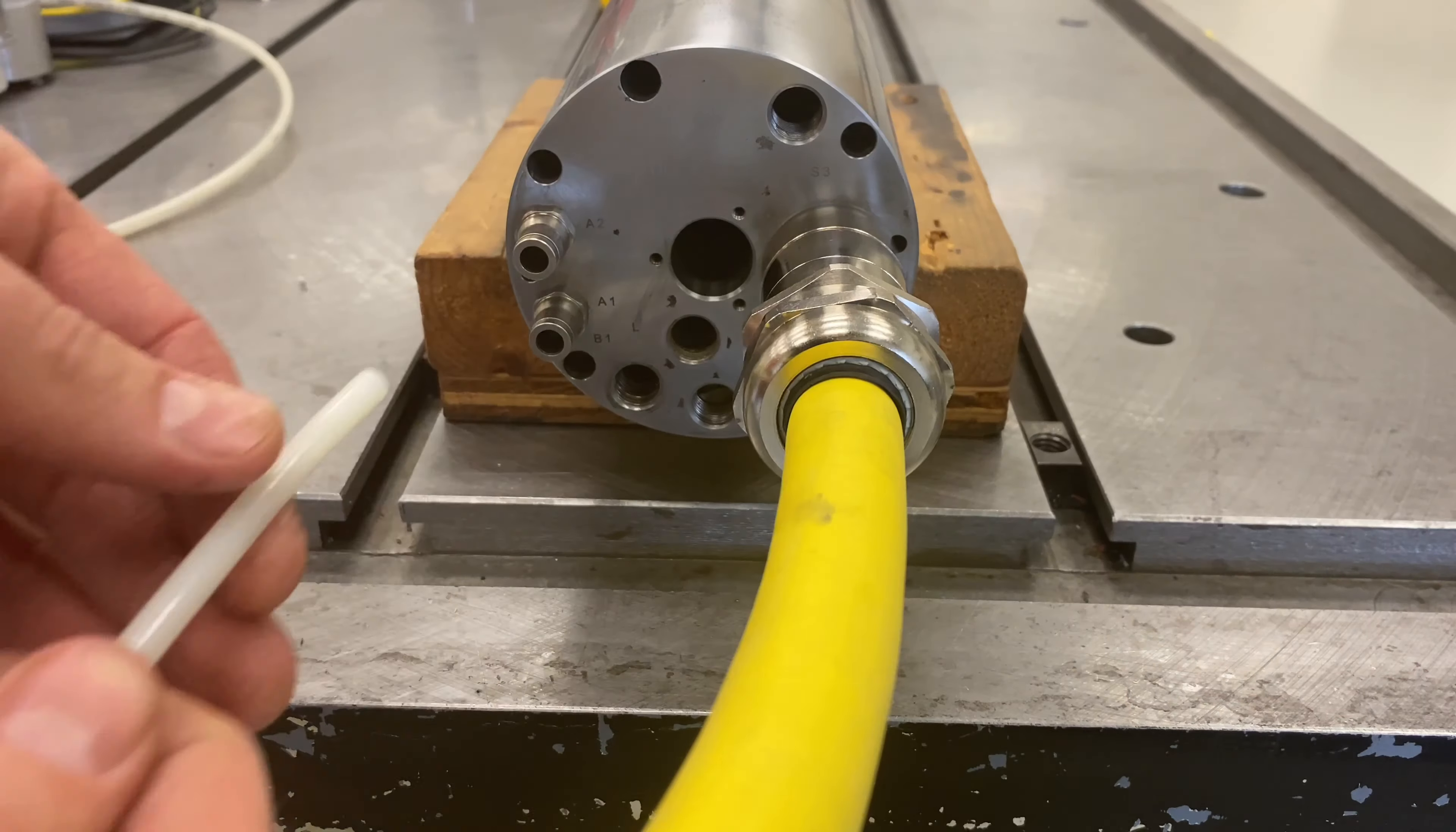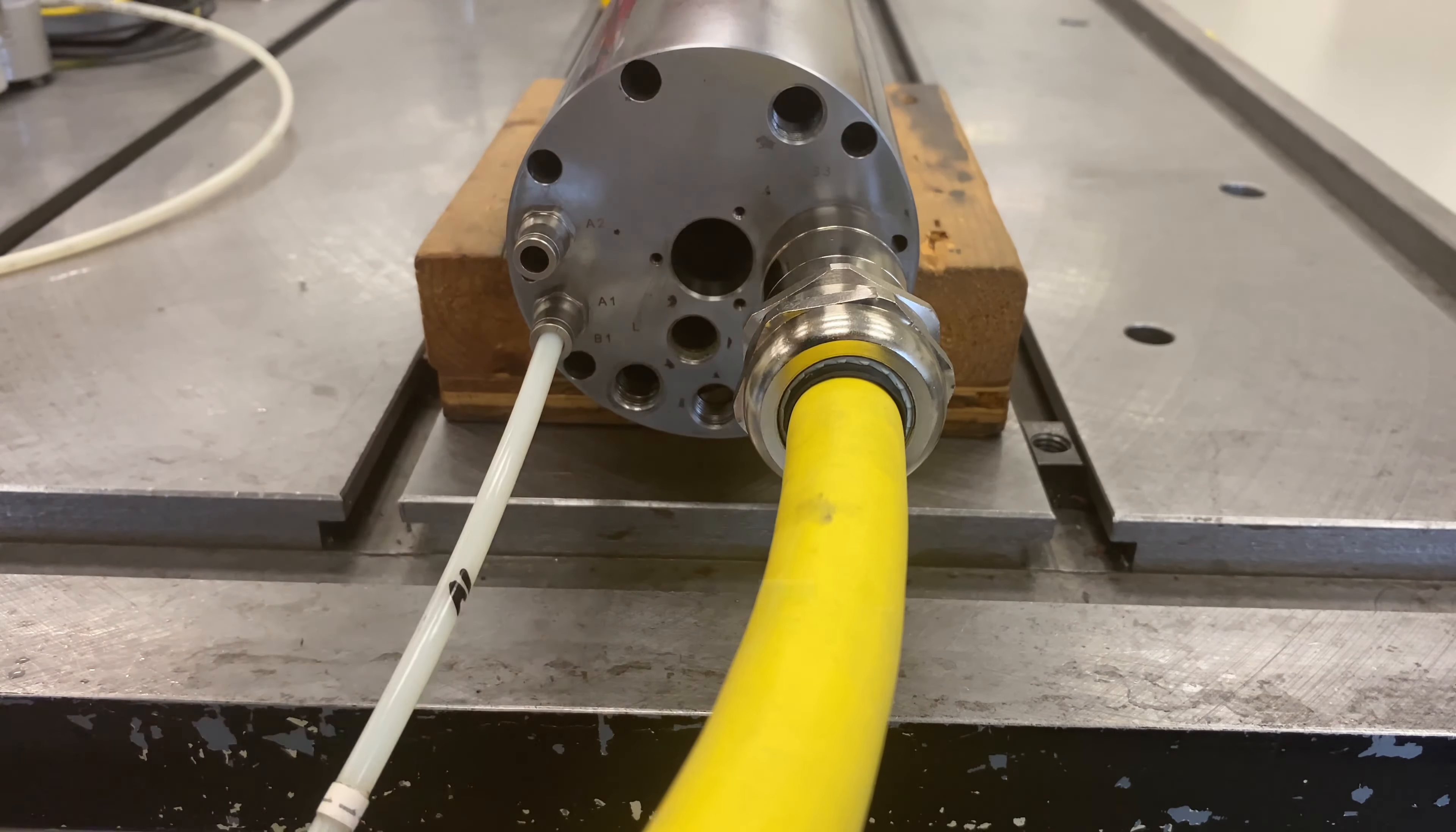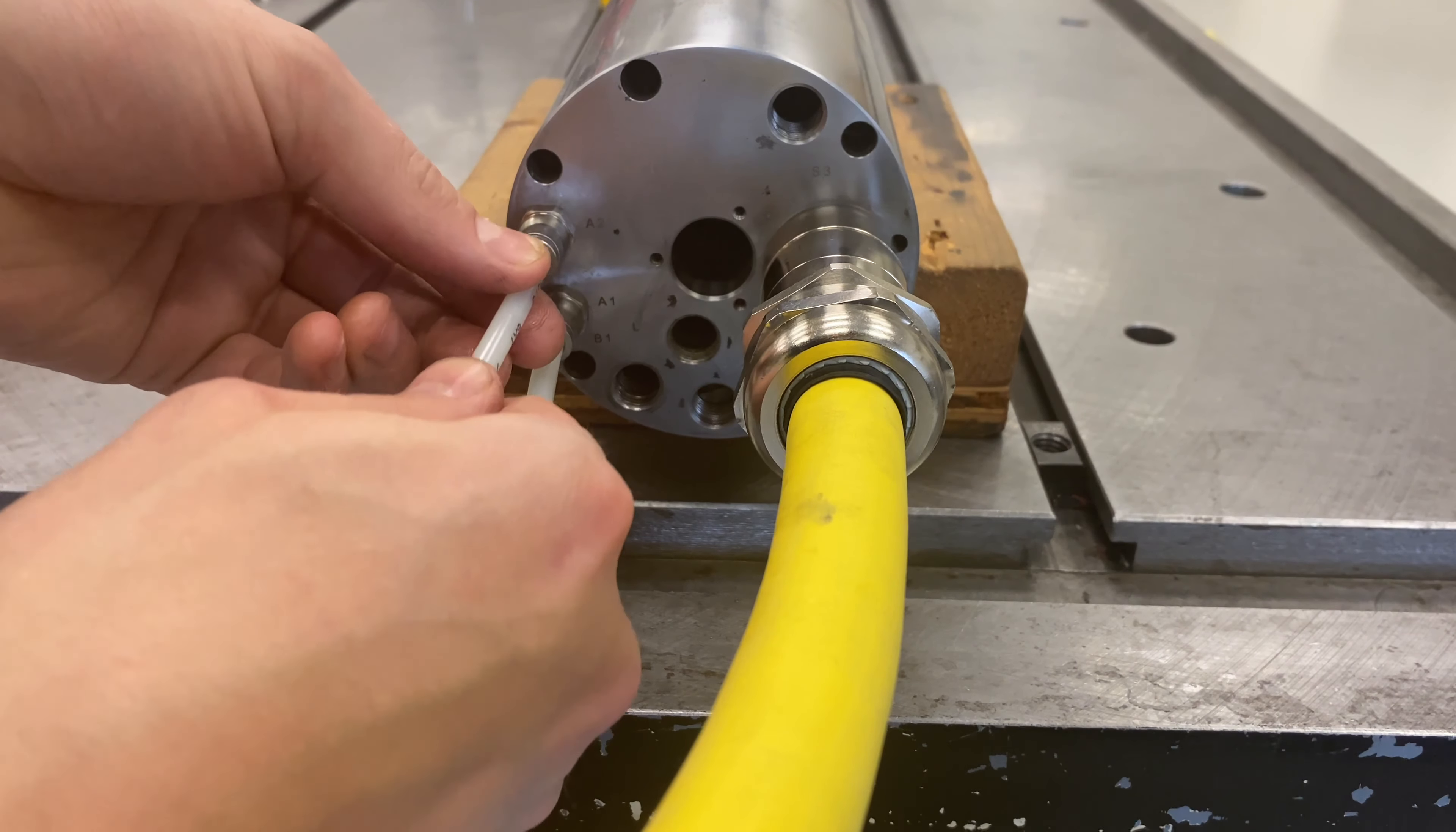Next, connect the oil lines to the spindle. Lines must be between 0.5 and 5 meters long with no sharp bends. Ensure there are no leaks.